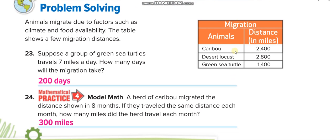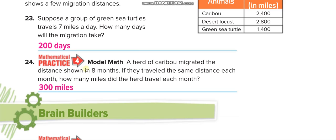You will use this table to solve this question. Suppose a group of green sea turtles travel 7 miles a day. Green sea turtles travel 1400 miles. So, 1400 miles divided by 7 is 200 days. A herd of caribou migrate the distance shown in 8 months. So, the distance shown is 2400. If they migrate this much distance in 8 months, so 2400 divided by 8, 24 divided by 8 is 3, and 2 zeros is 300 miles.